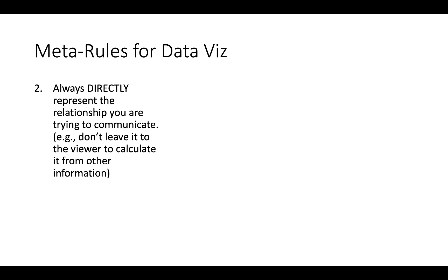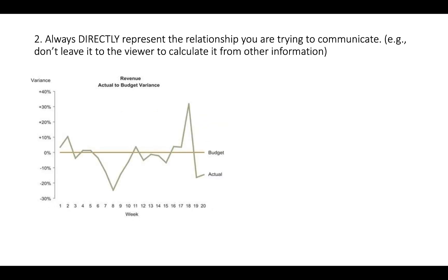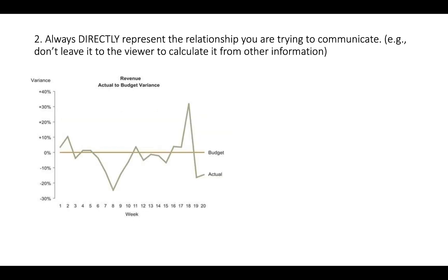The second rule is to always directly represent the relationship you're trying to communicate — meaning don't leave it to the viewer to calculate it from other information. If you're going to show actual-to-budget variance, don't show actuals and budgets and ask people to compare the two lines; actually calculate the variance and represent that. You don't want to rely on people's working memory to hold and manipulate multiple chunks of information.